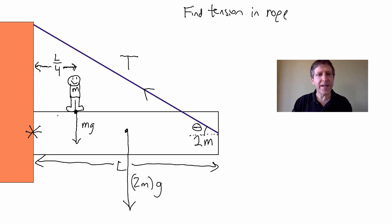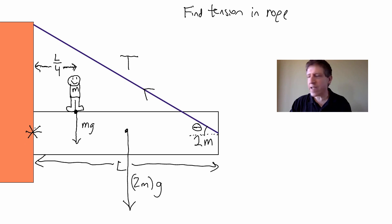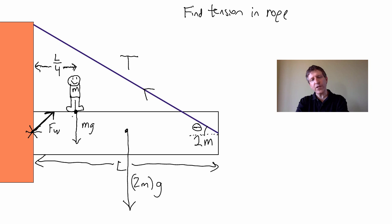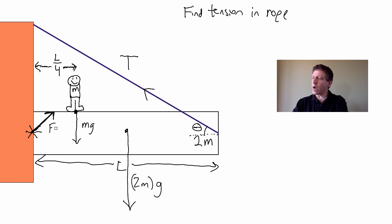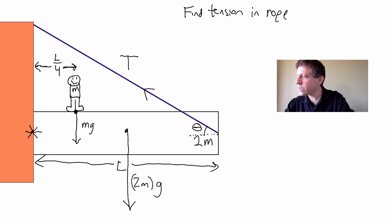The force of the wall has to push to the right to counteract the tension to the left, and it's got to hold this end up. Rather than trying to deal with that force directly, let's break it up into two components. On the AP exam they want you to show just that one force on the free body diagram — not components — but for this class it's okay to draw components as long as you realize that they are components.